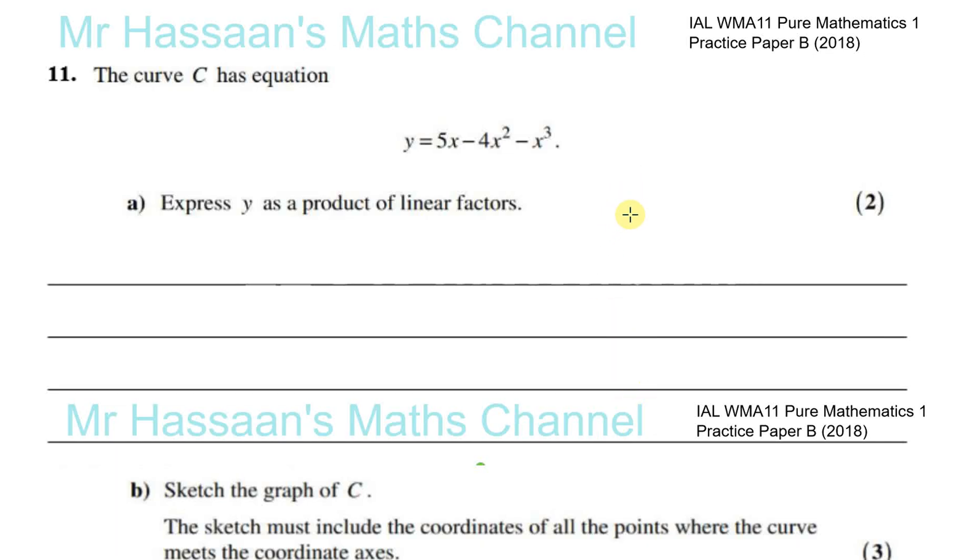Now for question number 11 from the practice paper B from Pure Maths 1, International A Level. Here we have a curve C with the equation Y equals 5X minus 4X squared minus X cubed. And we've been asked to express Y as a product of linear factors.